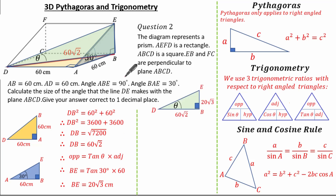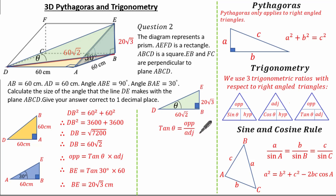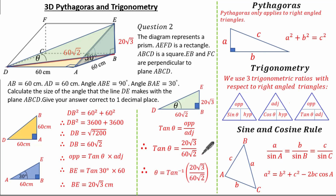Now I know BE is 20 root 3 and DB is 60 root 2. I have another right-angled triangle and can use it to find theta. Once again I've got opposite and adjacent, so I use tan. The angle is theta, opposite is 20 root 3, and adjacent is 60 root 2. To find theta I do the inverse of tan: tan to the minus 1 of 20 root 3 over 60 root 2, giving theta equals 22.2 degrees to one decimal place.